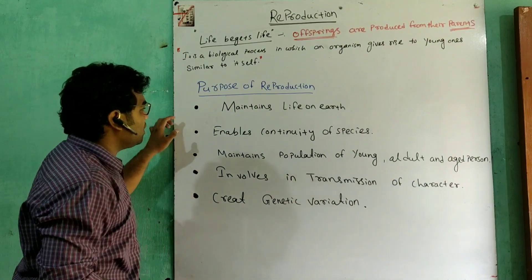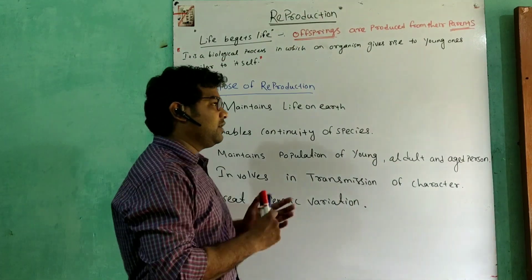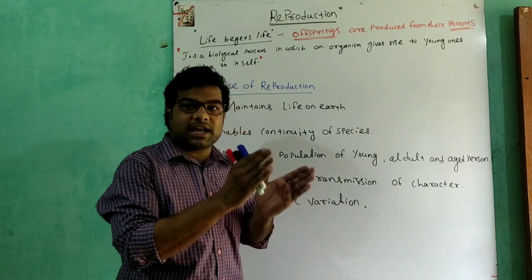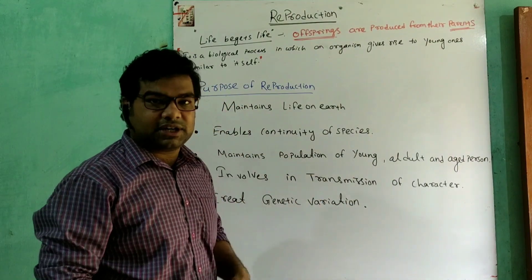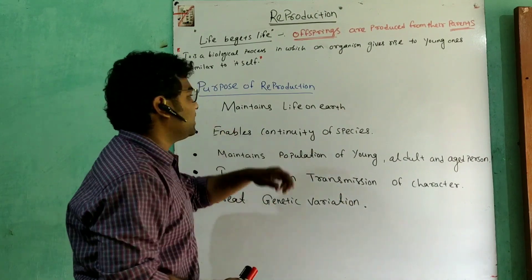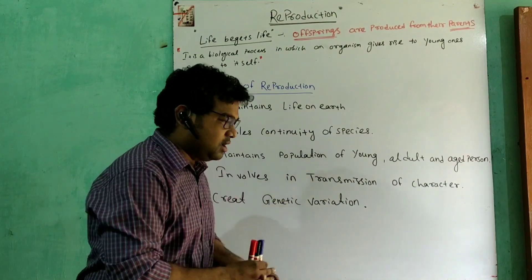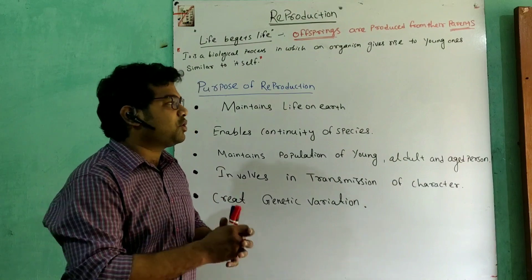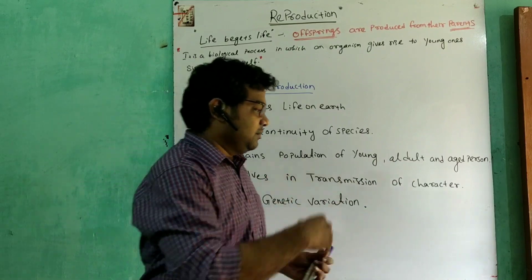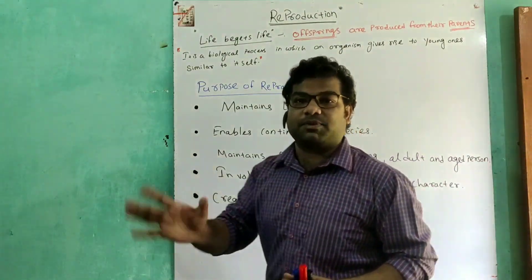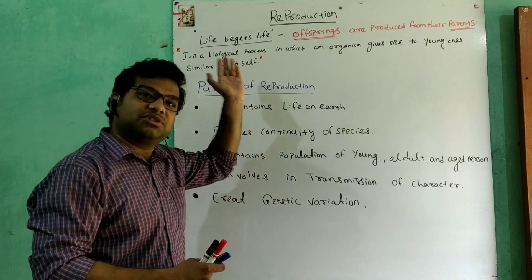The first purpose of reproduction is it maintains life on earth. Every organism has a particular lifespan and after death, life is maintained through reproduction according to the species. The second purpose is it enables continuity of species — nothing lives forever, but due to reproduction, species continue after each generation.